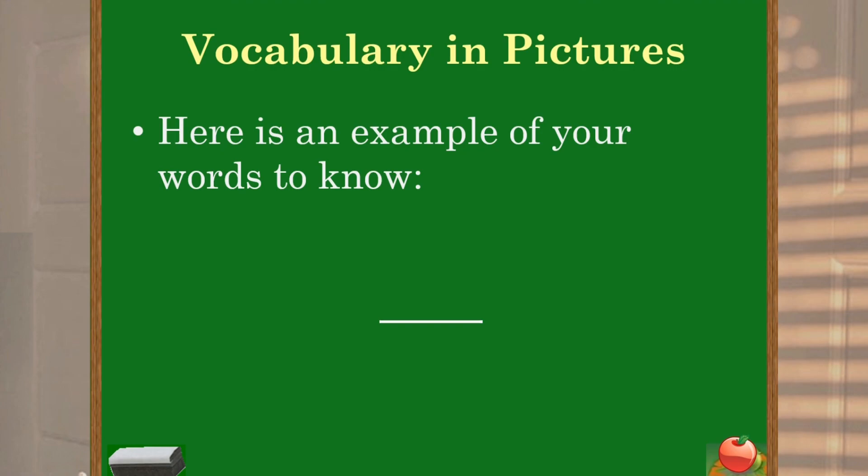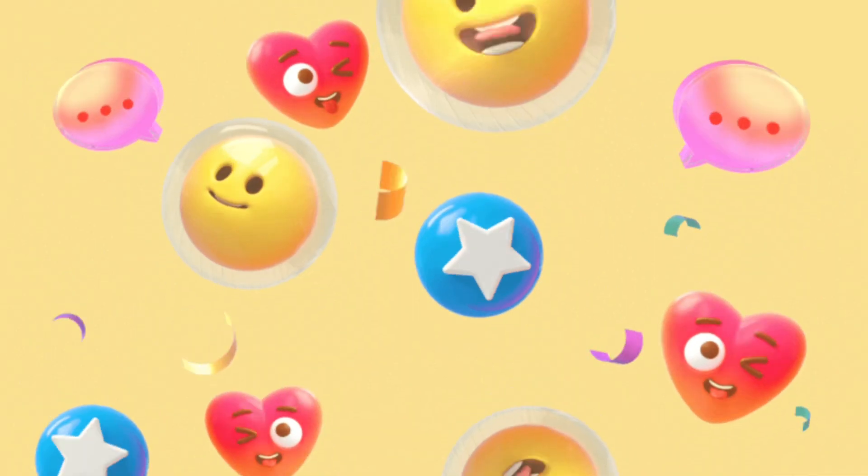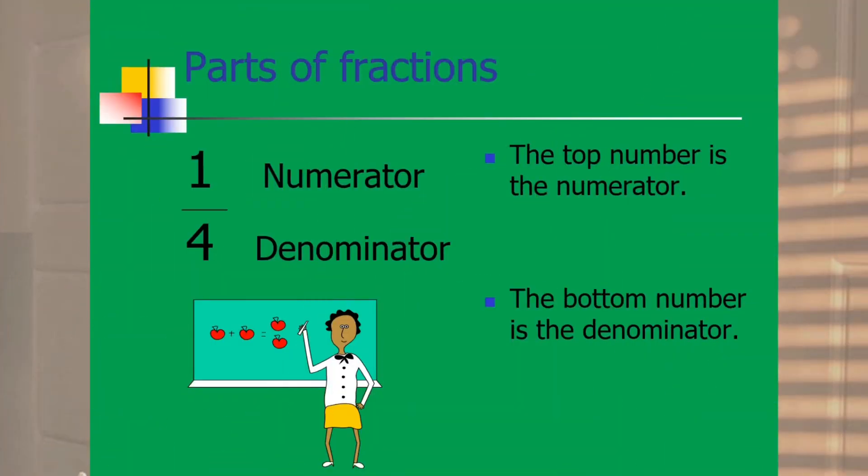So for example, let's see we have a fraction 3 over 4. So 3 is the numerator and this is a fraction bar which is a horizontal line and 4 is the denominator. So let's see another example here.